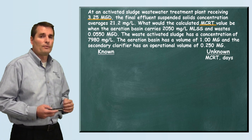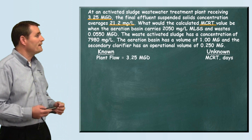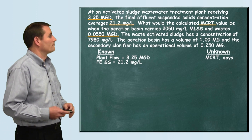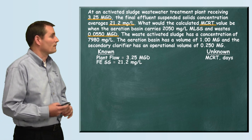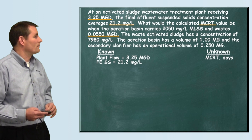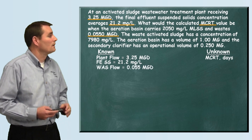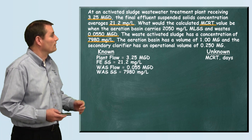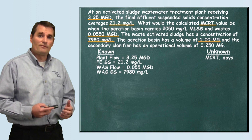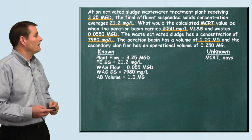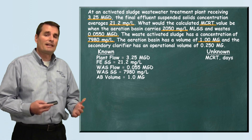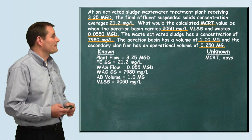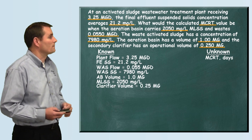Plant flow is 3.25 million gallons per day. The concentration of solids leaving the plant is 21.2 milligrams per liter. We're wasting sludge at a rate of 0.0550 million gallons per day — that's our WAS flow. The concentration of our waste activated sludge is 7,980 milligrams per liter. The aeration basin volume is 1 million gallons, carrying mixed liquor suspended solids at 2,050 milligrams per liter. The secondary clarifier has an operational volume of 0.250 million gallons.